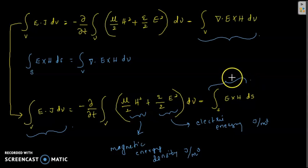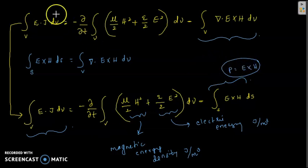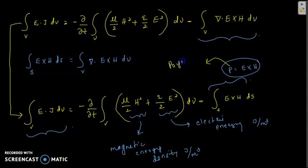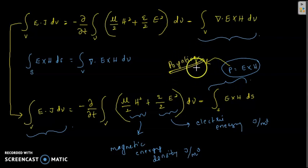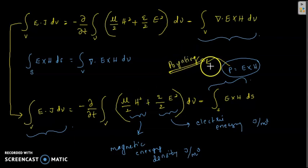This function P represents the power flow per unit volume, and P is a vector called the Poynting vector, named after the scientist John Henry Poynting. Hence this vector measures the rate of flow of energy of the wave as it propagates. This is the end of the first topic.